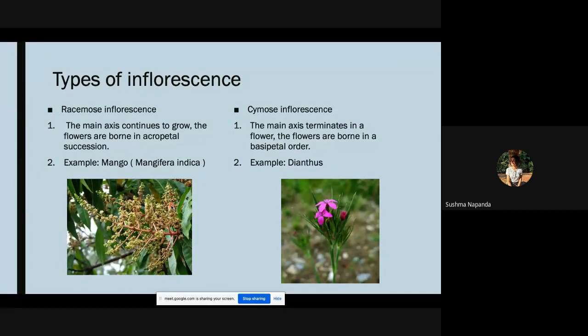In cymose inflorescence, the main axis terminates in a flower. The flowers are born in basipetal succession, that is the newer flowers are at the base whereas the older flowers are at the apex. An example is Dianthus. There are many types in Dianthus with different colors.